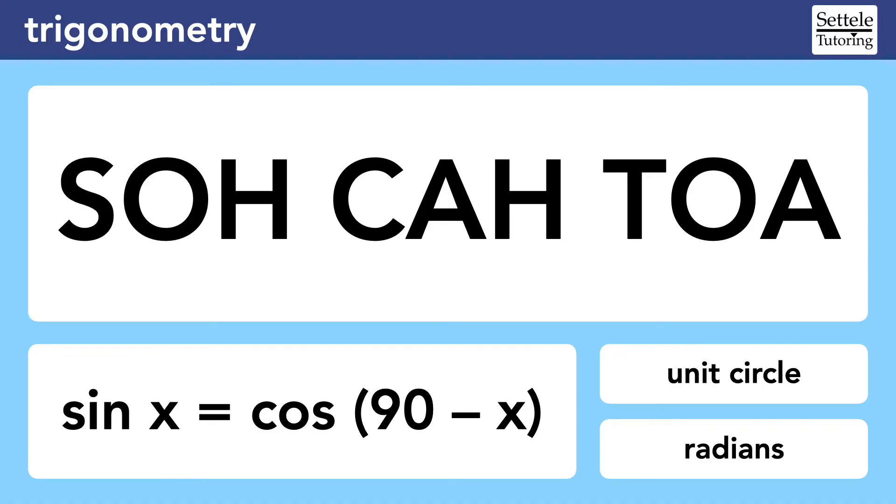For now, just remember that the radian conversion is given in the reference chart and easily handled by Desmos, and most questions about the unit circle are actually about special right triangles, like the 30-60-90 triangle, which is also given in the reference chart.